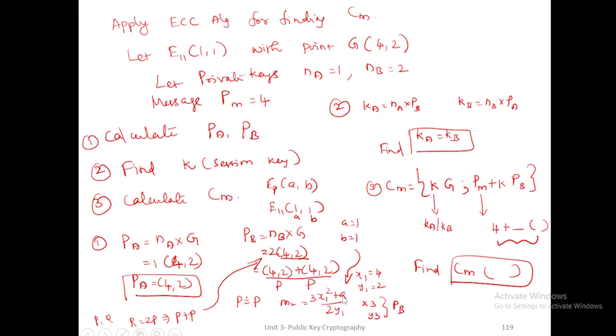So 3 into 4 squared is 48, plus 1 is 49, divided by 4. So m = 13/4 mod 11. We can rewrite this as 13 * 4^(-1) mod 11. So 13 mod 11 is 2. 4 inverse, the multiplicative inverse of 4 in 11, is 3. So 2 into 3 is 6, 6 mod 11 is 6. The slope value m is 6.